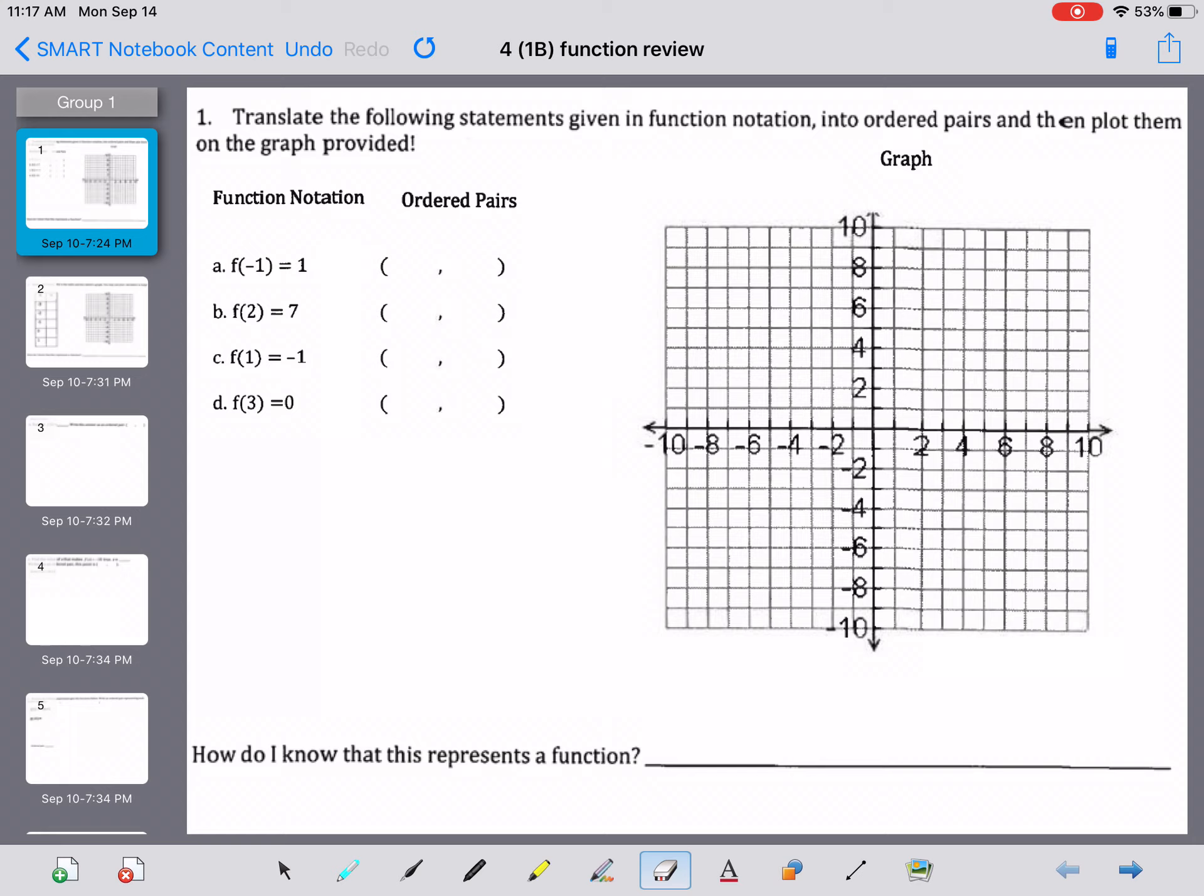So we've got function notation, ordered pairs, and the graph. The first one says f of negative 1 equals 1. Just a reminder that this is f of x, so f of x means that negative 1 is our x and then the whole expression f of x is the y value. Remember in terms of ordered pairs it goes in alphabetical order, x first, y second.